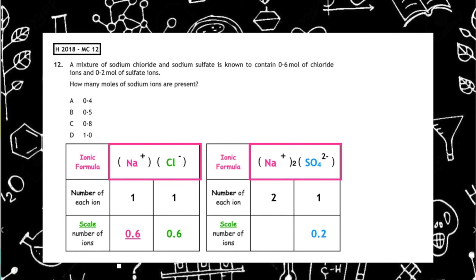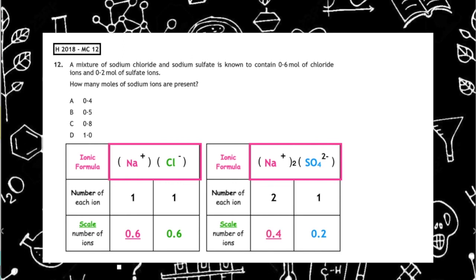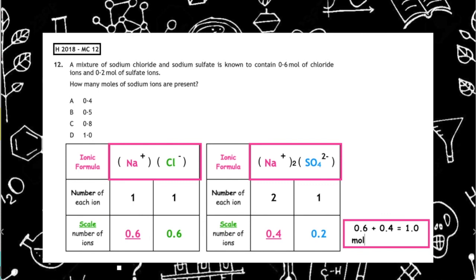2 times 0.2 divided by 1 gives us 0.4 moles of sodium ions in sodium sulfate. Adding the total number of sodium ions: 0.6 plus 0.4 gives us a total of 1.0 moles of sodium ions. Multiple choice answer D.